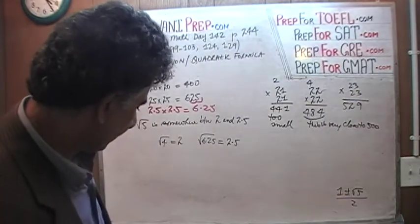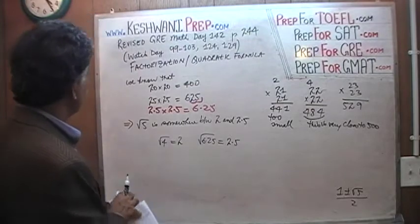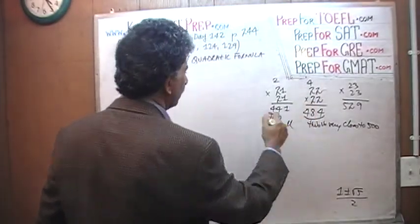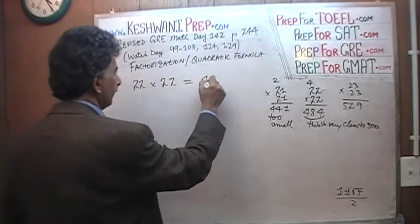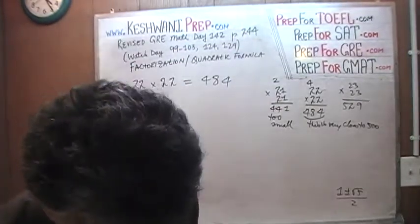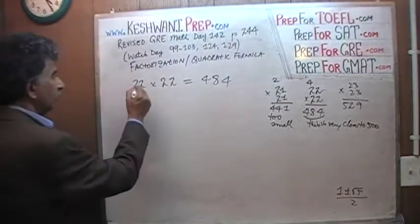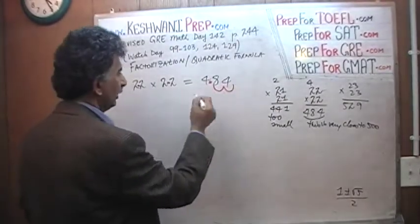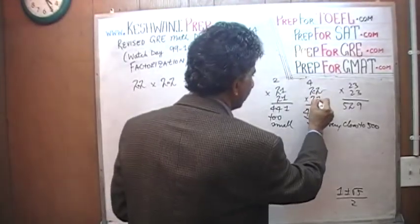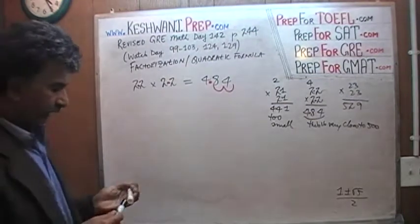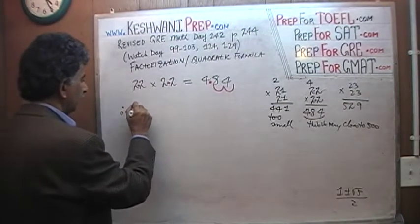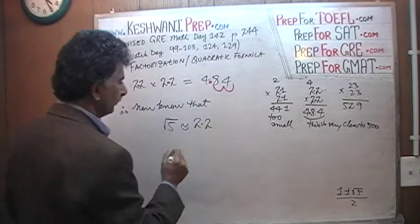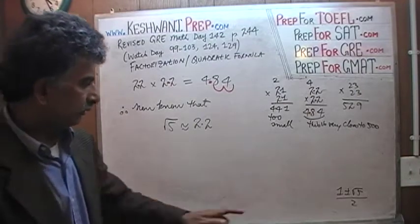Now that we know 22 times 22 is 484, that tells us that 2.2 times 2.2 is 4.84 — we just move the decimal place two positions. 4.84 is very close to 5. Therefore, the square root of 5 is approximately 2.2.